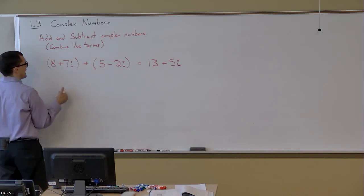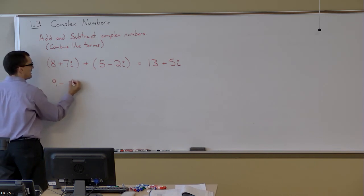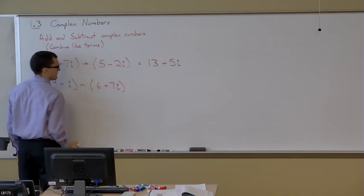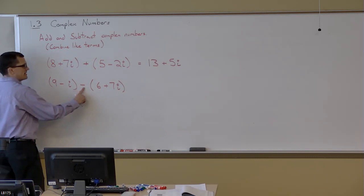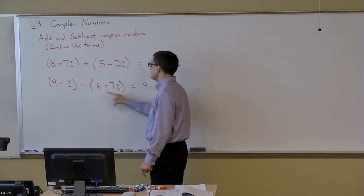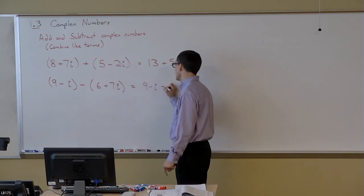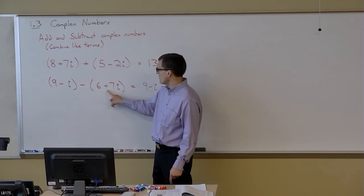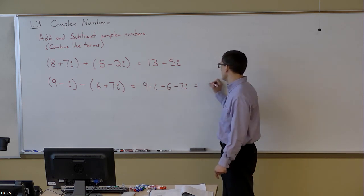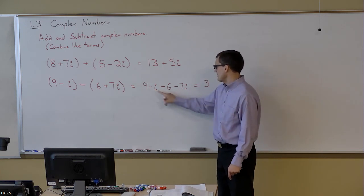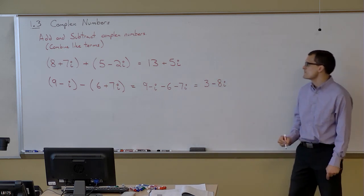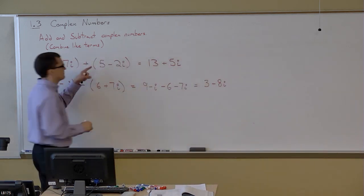Now if we subtract, let's take (9-i) subtract (6+7i). Well, subtracting is like adding the negative, and just like when we dealt with polynomials, all we're going to do is distribute that minus sign into both the real part and the imaginary part. So we're going to get -6-7i. 9-6, those are like terms that combine to give me 3. -i-7i, that's like -1i. So whenever we subtract, we distribute the negative and then combine like terms.